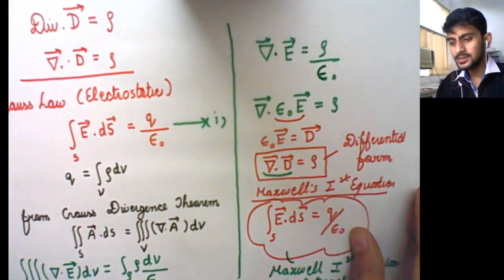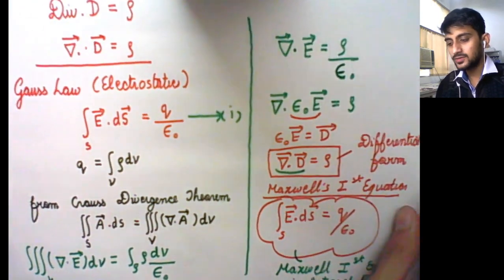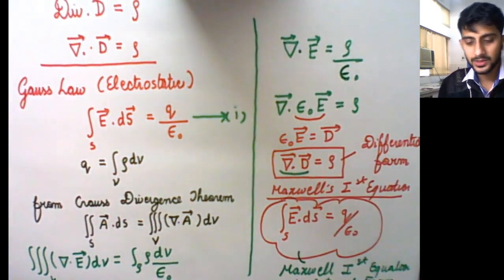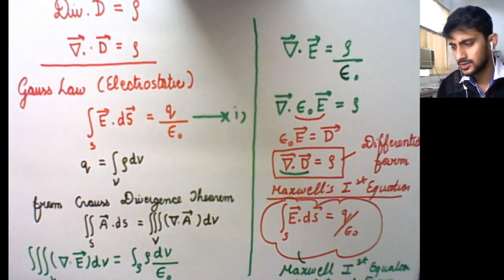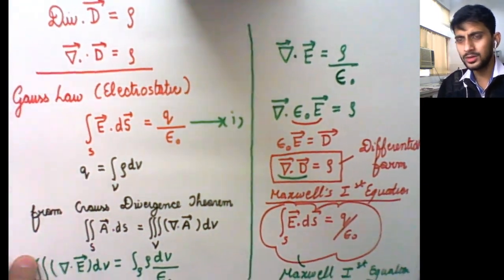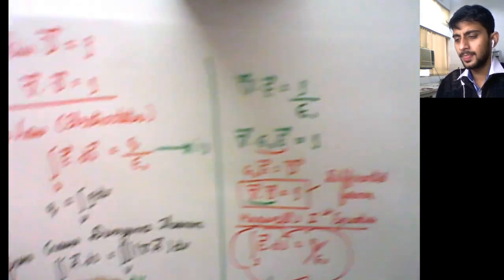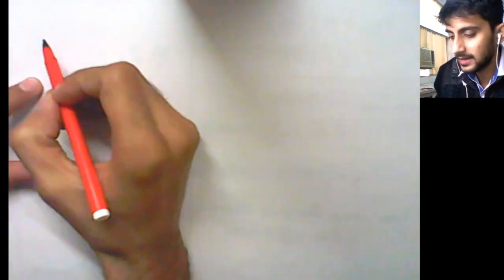This is Maxwell's first equation. You don't have to do much for Maxwell's second equation because Gauss's law in magnetostatics is given by the flux of magnetic field lines coming out of a closed surface area S equals zero.